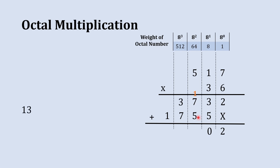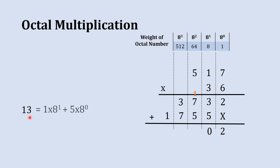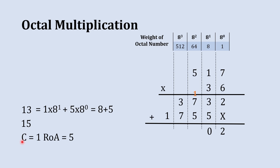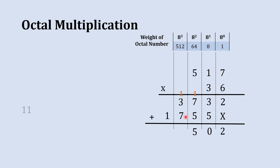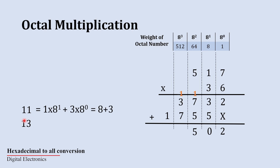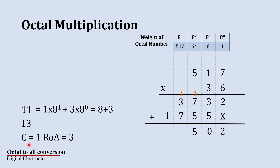In this column, 1 plus 7 plus 5 is 13. Since 13 is greater than 8, we convert it to octal — its octal equivalent is 15. So 1 is forwarded as carry and 5 is the result, written here. In the next column, 1 plus 3 plus 7 is 11, which is greater than 8. Its octal equivalent is 13, so 1 is forwarded as carry and 3 is the result, written here.